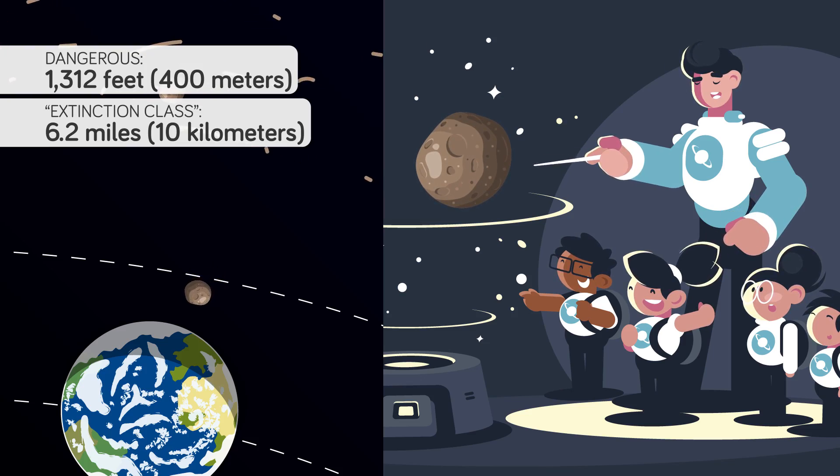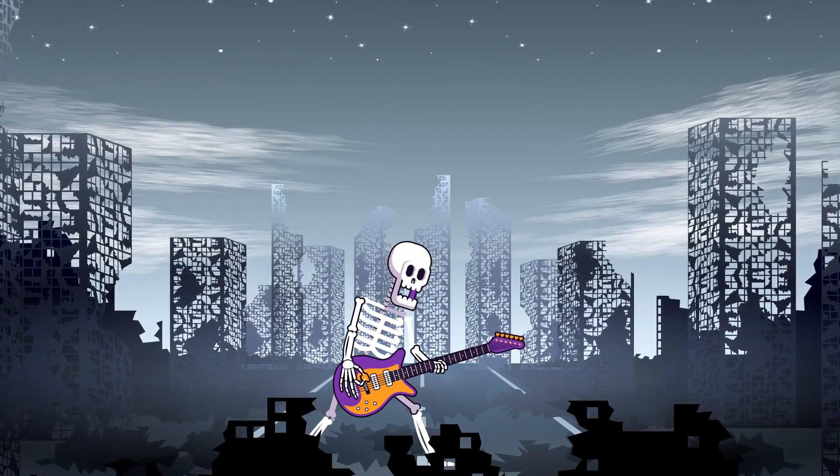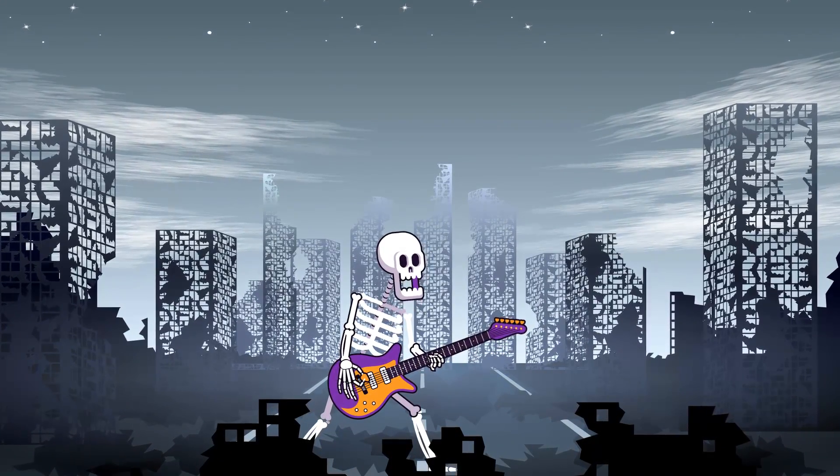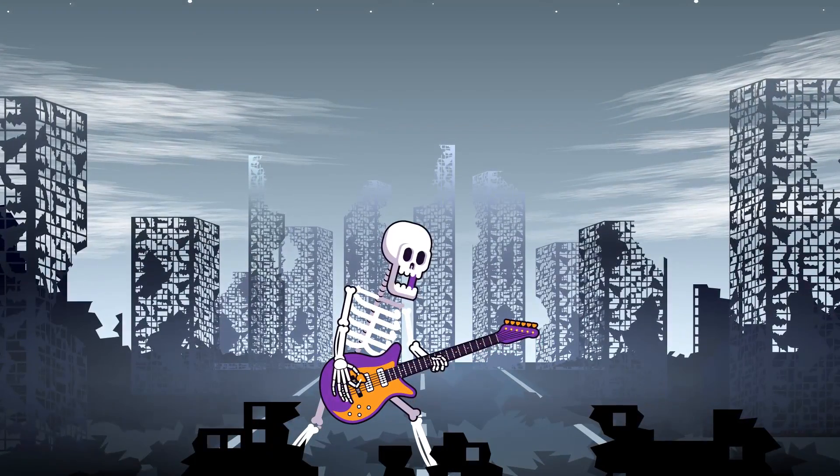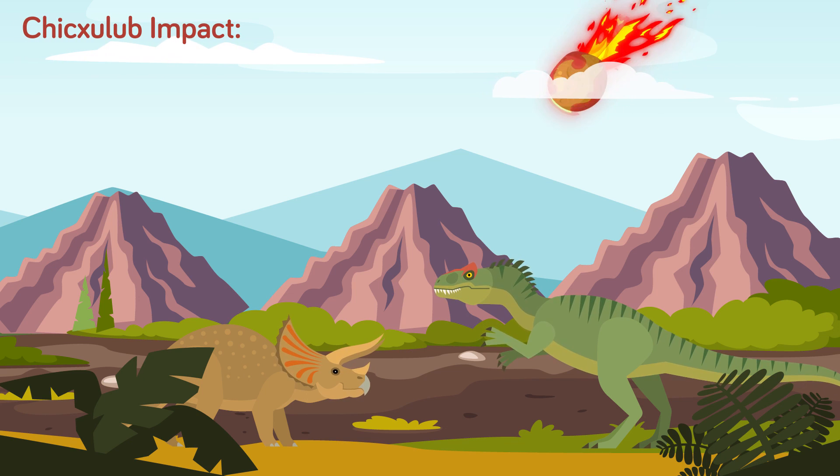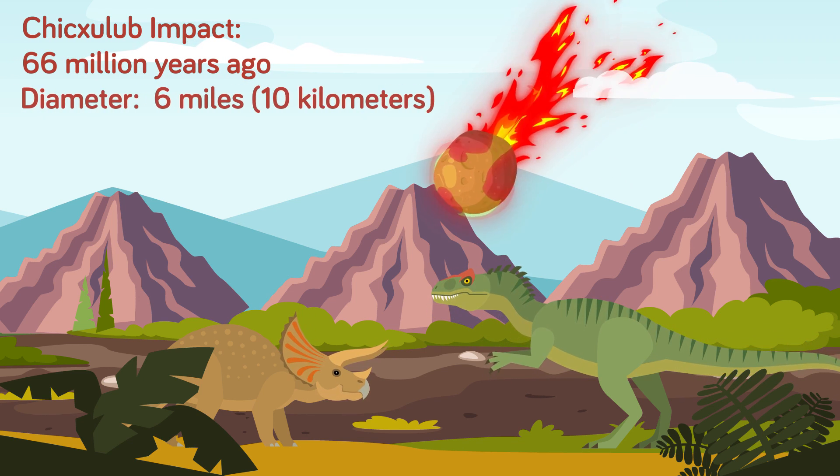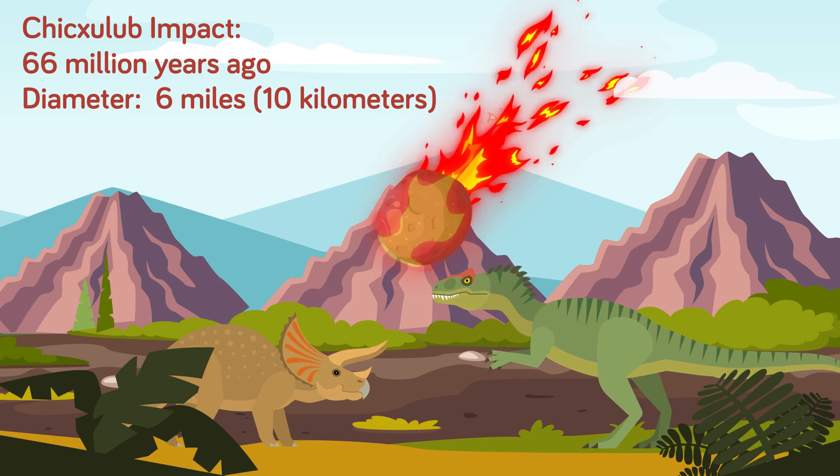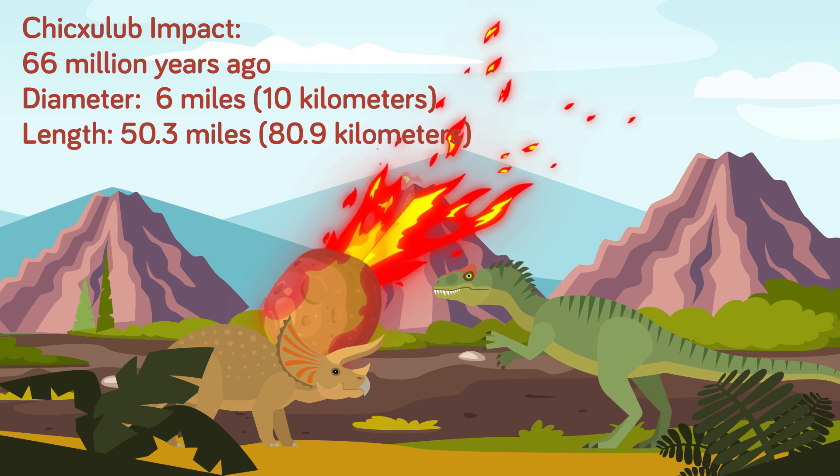Extinction-class is a nice scientific way of saying everything on Earth would be dead if an asteroid that big collided with our planet, except maybe cockroaches and Keith Richards. The asteroid that caused the Chicxulub impact and wiped out three quarters of plant and animal life on the planet 66 million years ago, including the dinosaurs, was at least 6 miles in diameter, with some scientists theorizing that it was up to 50.3 miles long.